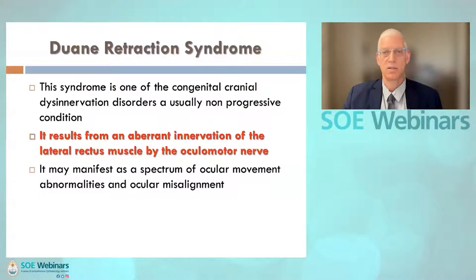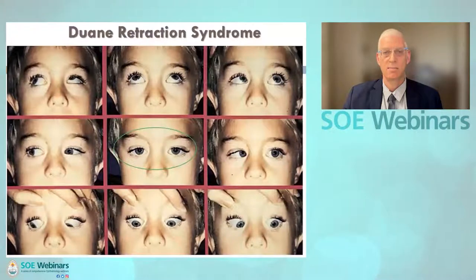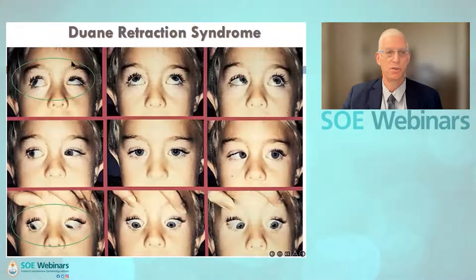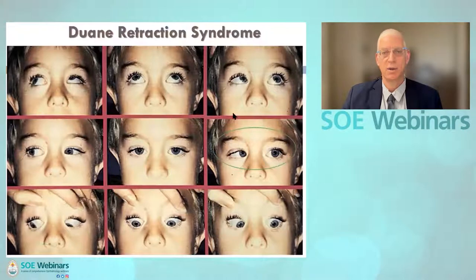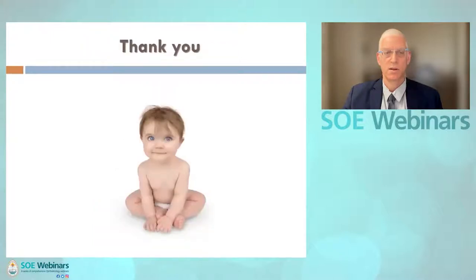Duane syndrome is one of several congenital cranial disinervation syndromes and represents a clinical spectrum that is usually non-progressive. Agenesis of the abducens nerve nucleus leads to aberrant innervation of the lateral rectus muscle by the third cranial nerve. In this example, the eyes in primary position are straight; however, we can see both an upshoot and downshoot in adduction of the left eye, and a limitation in abduction. The take-home message is to refer any patient, especially children, with reported intermittent strabismus to a pediatric ophthalmology team to rule out true ocular misalignment and detect or prevent potential amblyopia and psychosocial problems. Thank you.